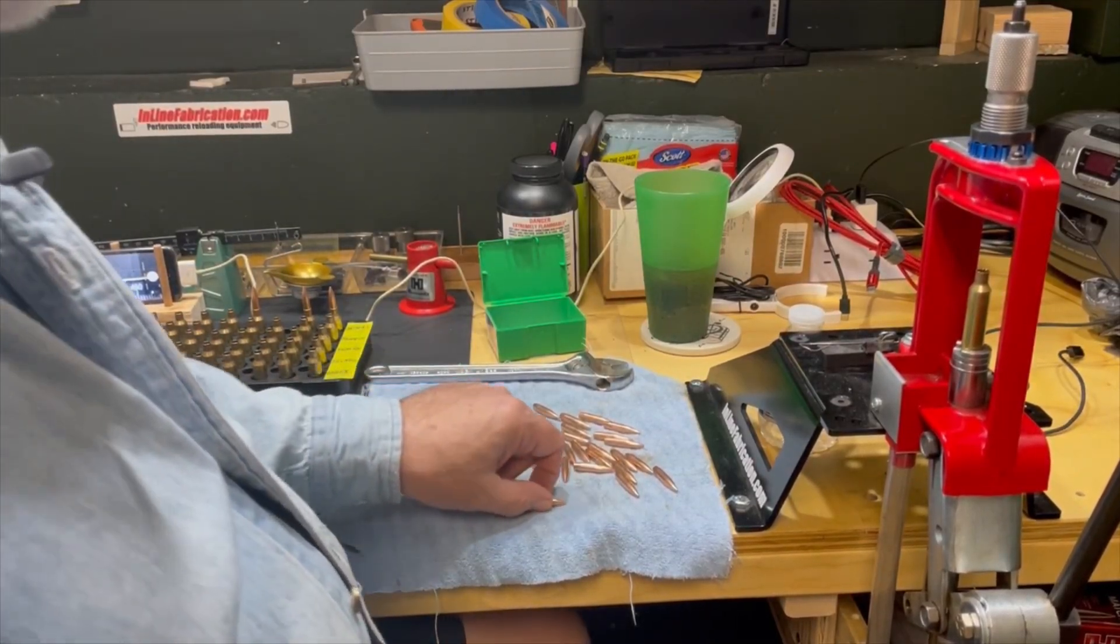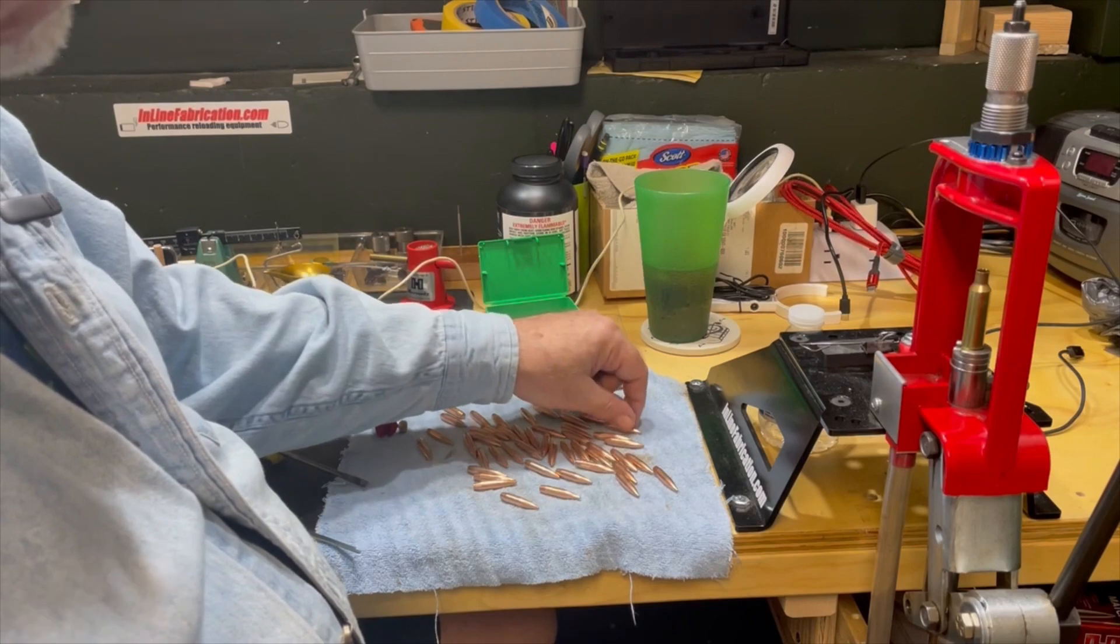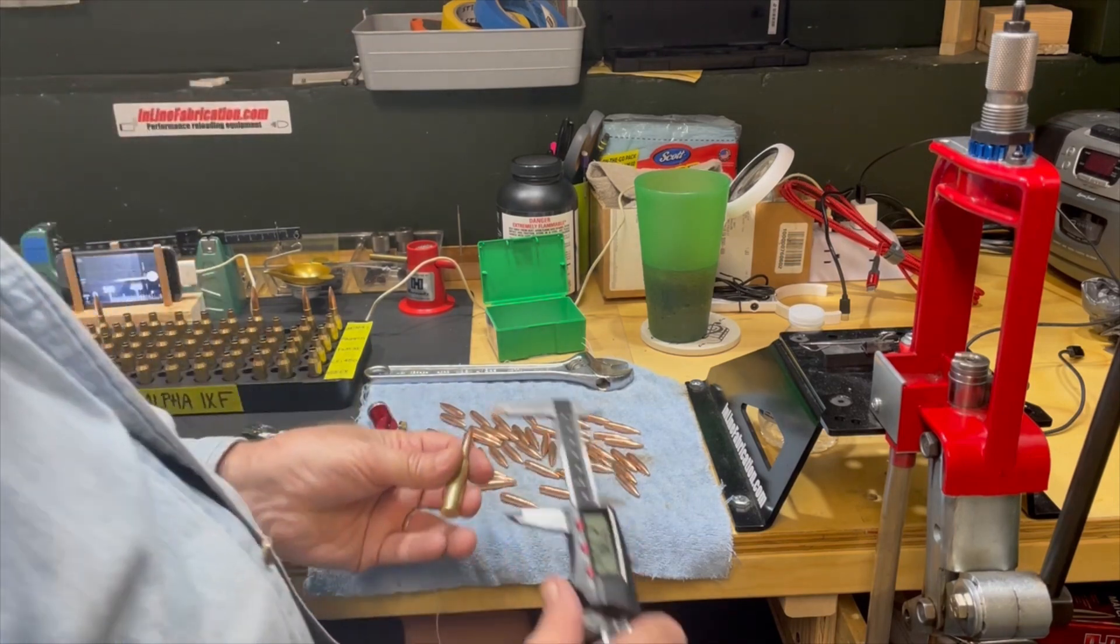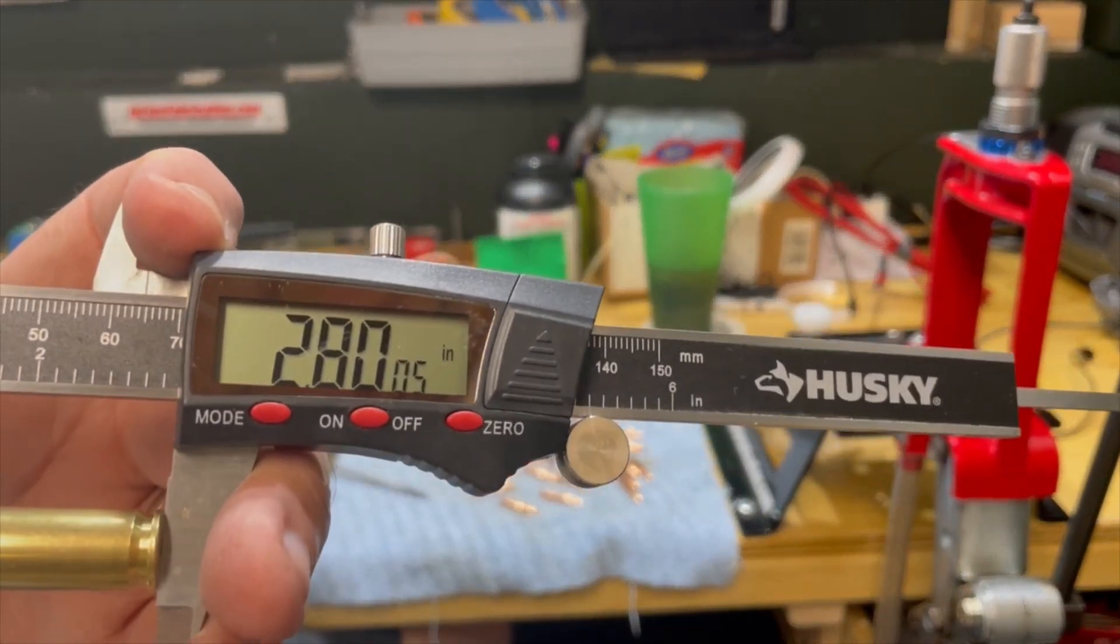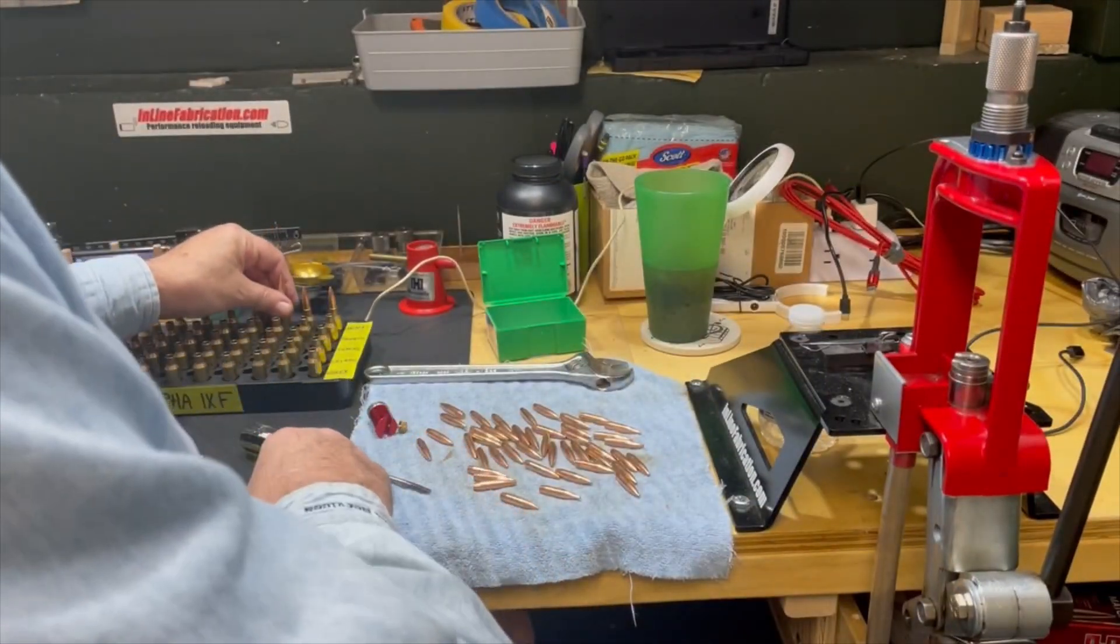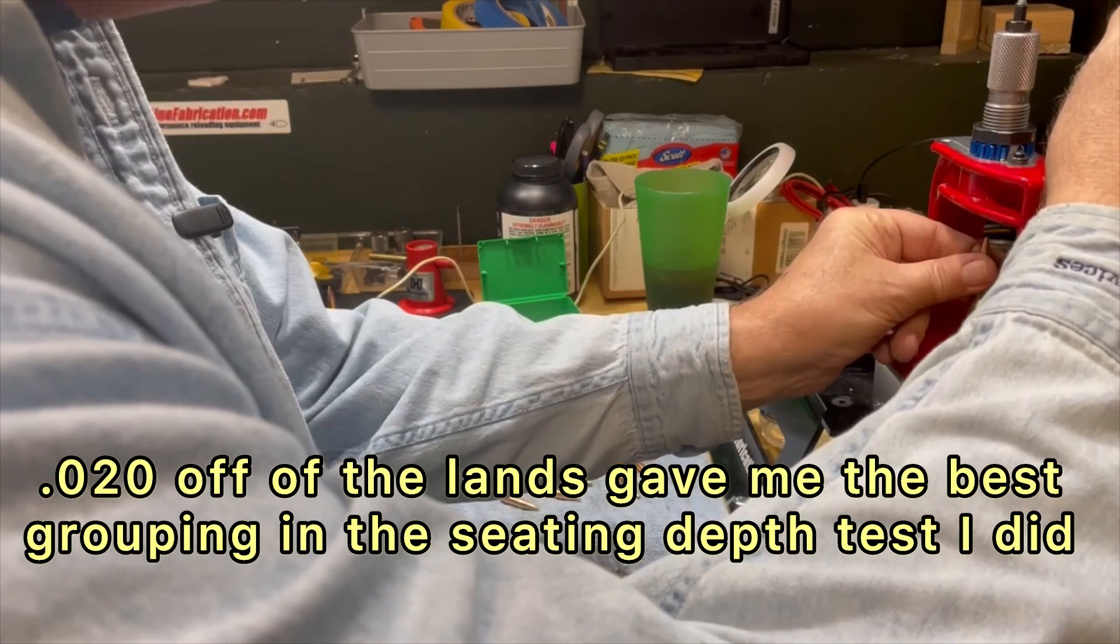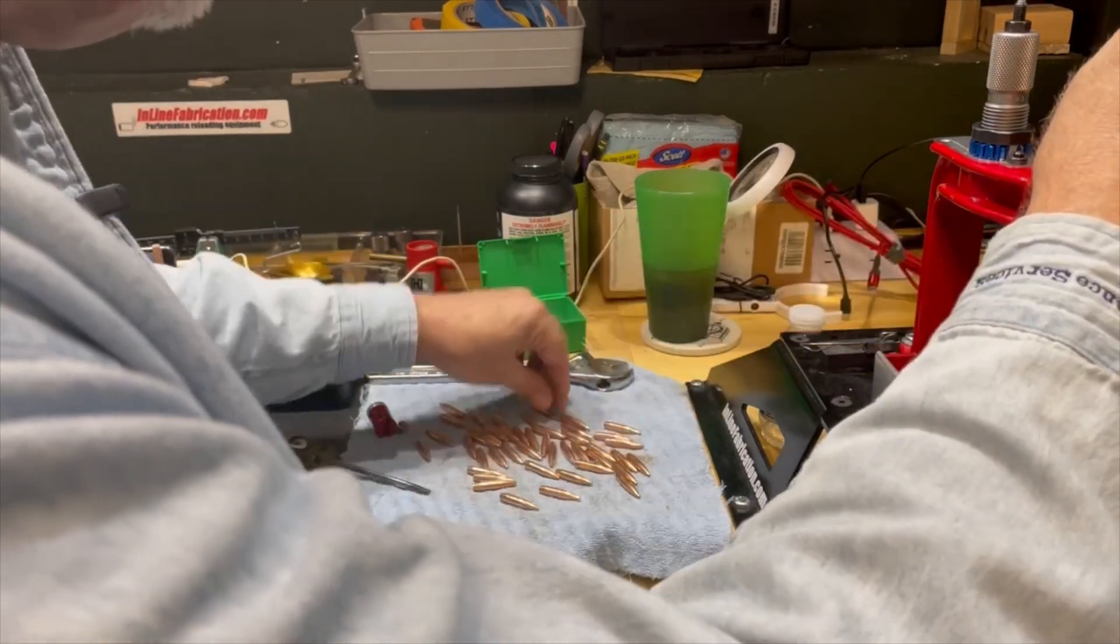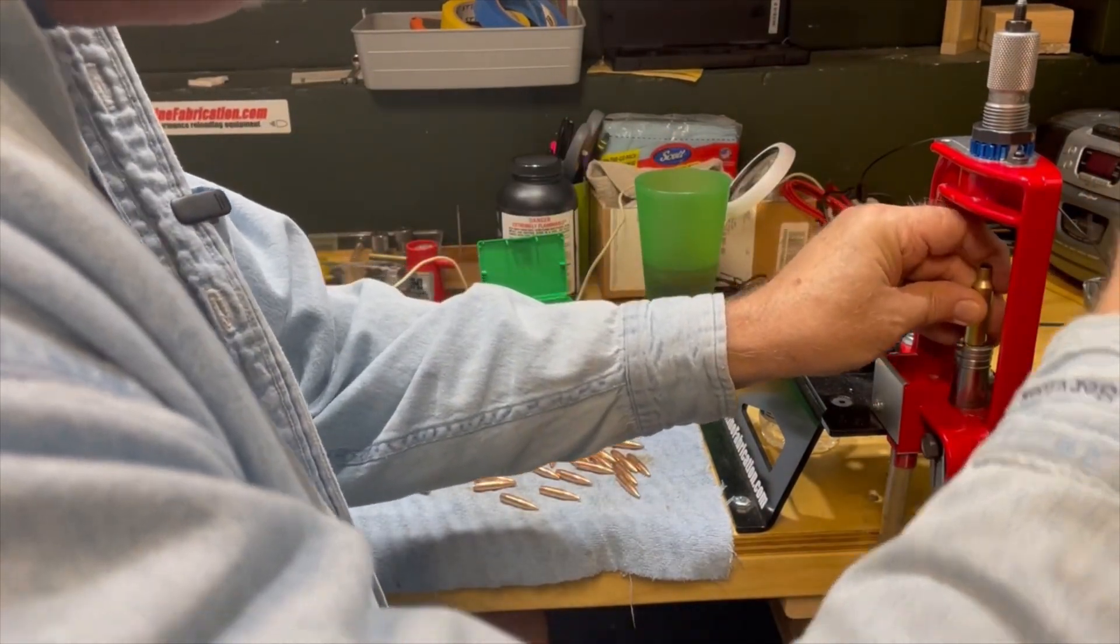Now it's time to seat the bullets. I have them all laid out on this towel and turned them all the same direction so they're easier to pick up. The recommended overall length is 2.80 inches. This is coming in at 2.80 and a half, that's close enough. I'm going to seat these all the same. That measurement also happens to be 20 thousandths off of the lands, which is the sweet spot for this rifle. We'll seat all these and then we'll be ready to take them to the range.